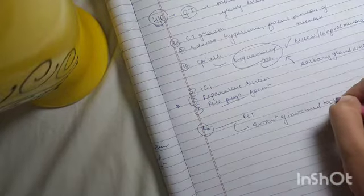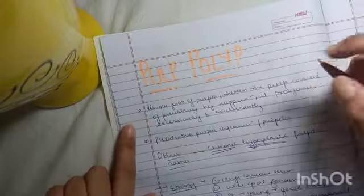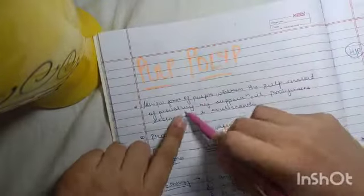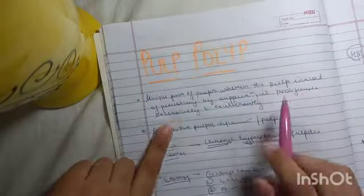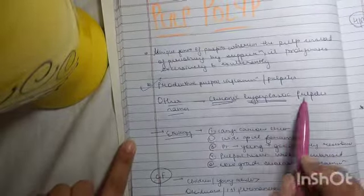This covers the chronic hyperplastic pulpitis. I will just sum up. It is basically a unique form of pulpitis where the pulp does not vanish away or perish due to suppuration. It actually proliferates excessively and exuberantly. It is basically a productive pulpitis. The other name is chronic hyperplastic pulpitis. Remember this name. It is very important.